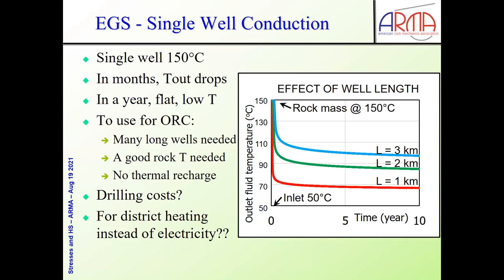Here is some work from Ali Gavidel, a graduate student who is going to be graduating fairly soon. It shows something very important if you're just trying to extract energy using a single well. By the way, it doesn't matter much what the diameter of the well is. In months, we see that the outlet temperature drops suddenly — that's called breakthrough. Then it flattens out. You can see the effect for different lengths: one, two, or three kilometer lengths. In order to plan a project, we have to be able to do this kind of simulation.